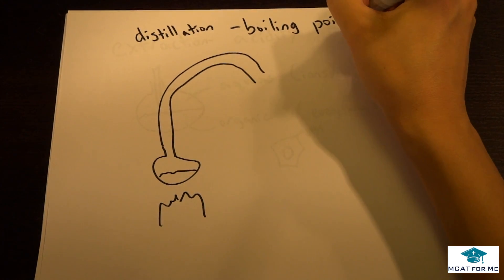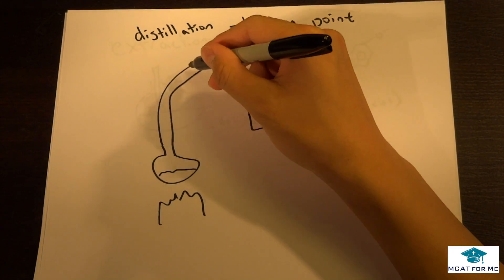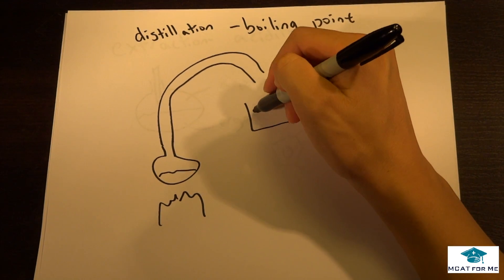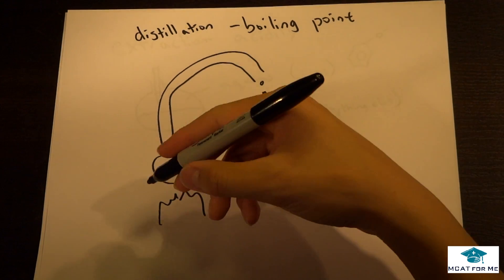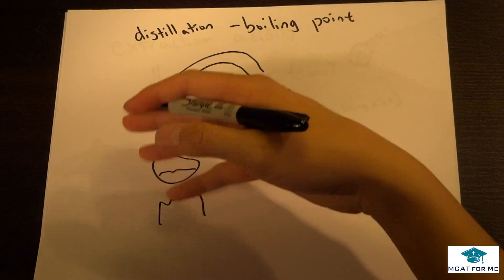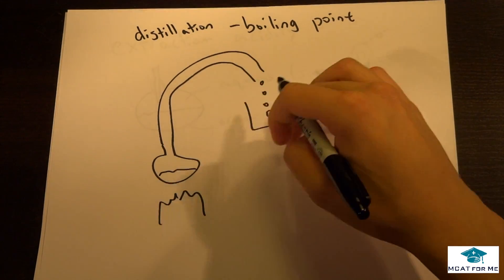I think you guys can guess when something boils it will turn into vapor and then eventually it will condense back into liquid and it will drop back down here. So something that has a very low boiling point will come out first and you can extract that or you can distill that first.